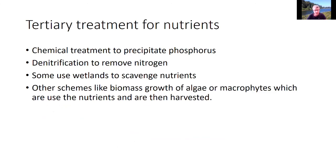In tertiary treatment for nutrients, chemical methods can be used to precipitate phosphorus — for example, precipitation with iron — which is expensive but effective where phosphorus reduction is needed. There can be another denitrification step to remove nitrogen. Some places use wetlands to scavenge nutrients: water is dumped into the wetland, flows through, and plants take up the nutrients. The plants need to be harvested periodically or they become oversaturated with nutrients. There is also denitrification in the wetland that removes nitrogen. Other schemes include growing algae or macrophytes as biomass that uses the nutrients and is then harvested.